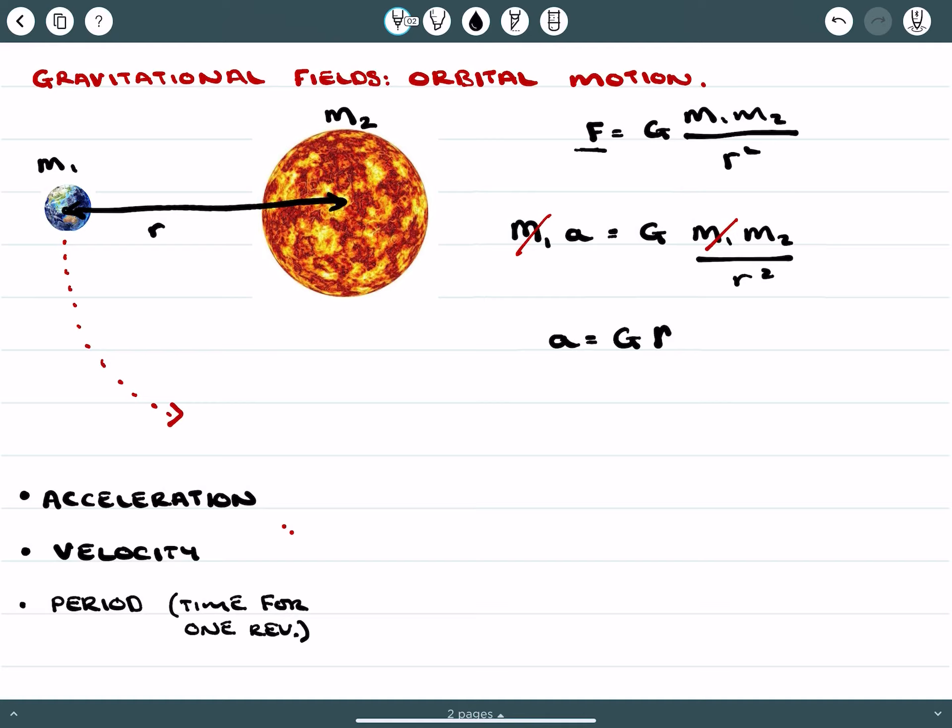GM, which represents the larger body, all over r squared. And that's our equation that we need to retain for acceleration.